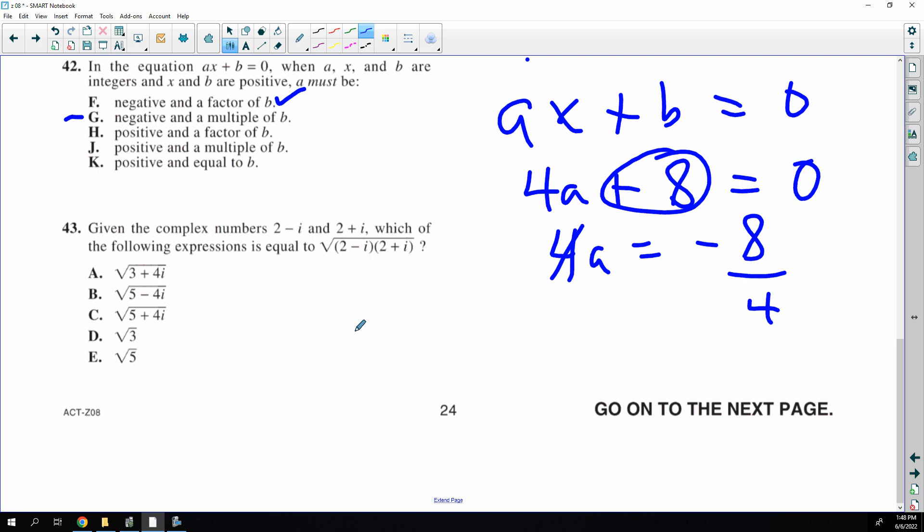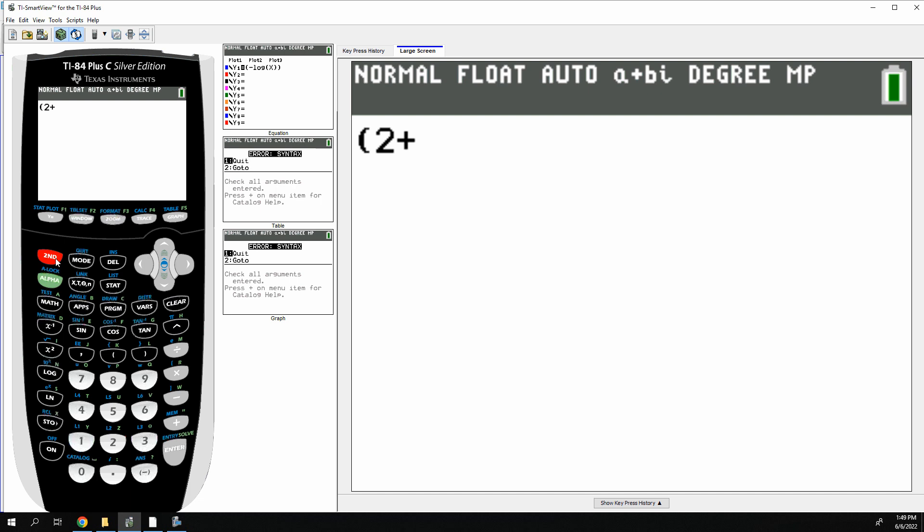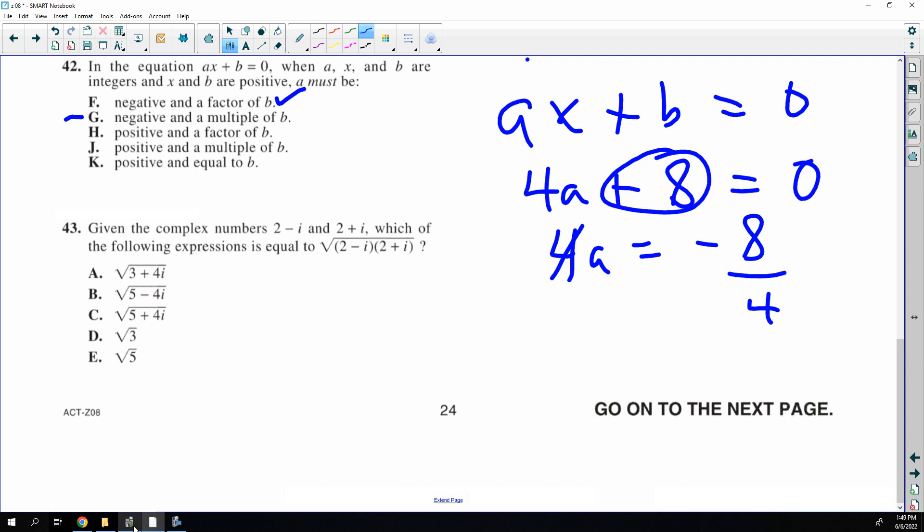This one is, of course, 2 minus i, 2 plus i is just what I've been telling you all. Use this and you get it. And I didn't put the square root because I want to find out what this is first. And the answer is 5. So the square root just stays there. And this product here is 5. So the answer is the square root of 5.